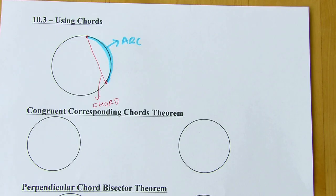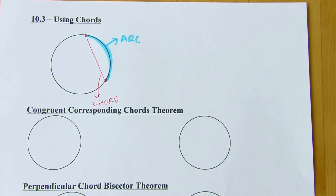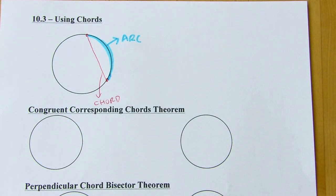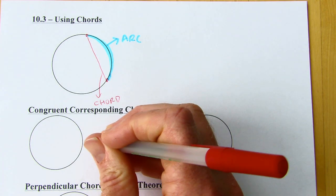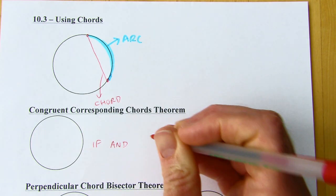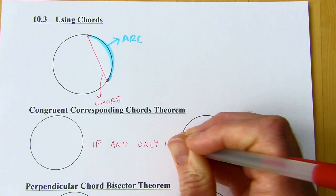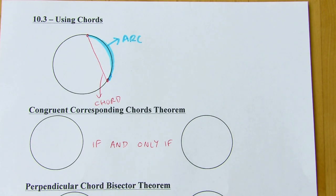This section has a lot of relationships between arcs and chords, and that's really what it's about. The first of those relationships is the Congruent Corresponding Chords Theorem. This is going to be an if-and-only-if theorem, meaning it works both ways — it's a biconditional, so I can flip it around and it will still work.